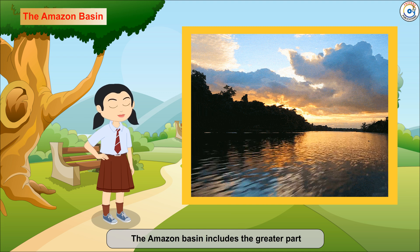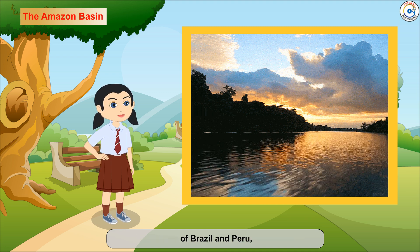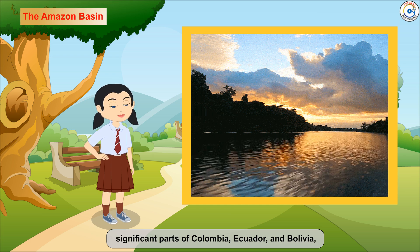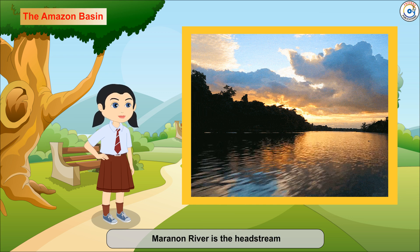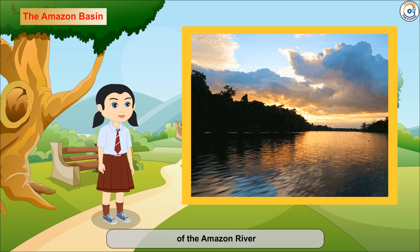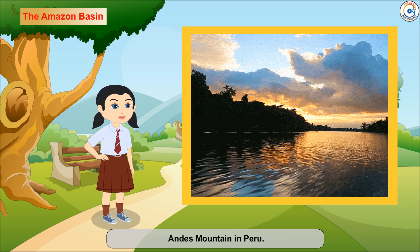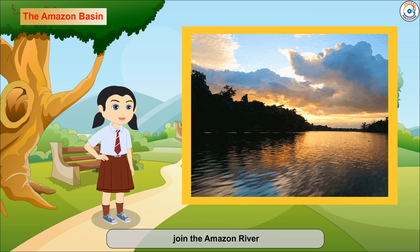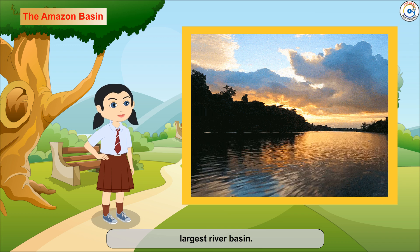The Amazon Basin includes the greater part of Brazil and Peru, significant parts of Colombia, Ecuador and Bolivia, and a small area of Venezuela. The Maranon River is the head stream of the Amazon River, which rises from the snow-covered Andes Mountains in Peru. More than 1,000 tributaries join the Amazon River, making it the world's largest river basin.